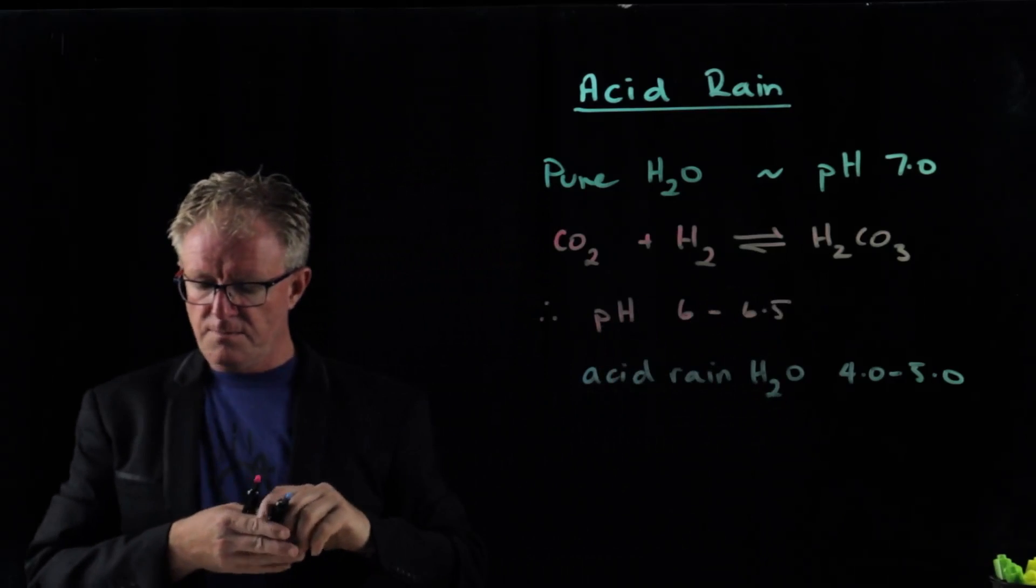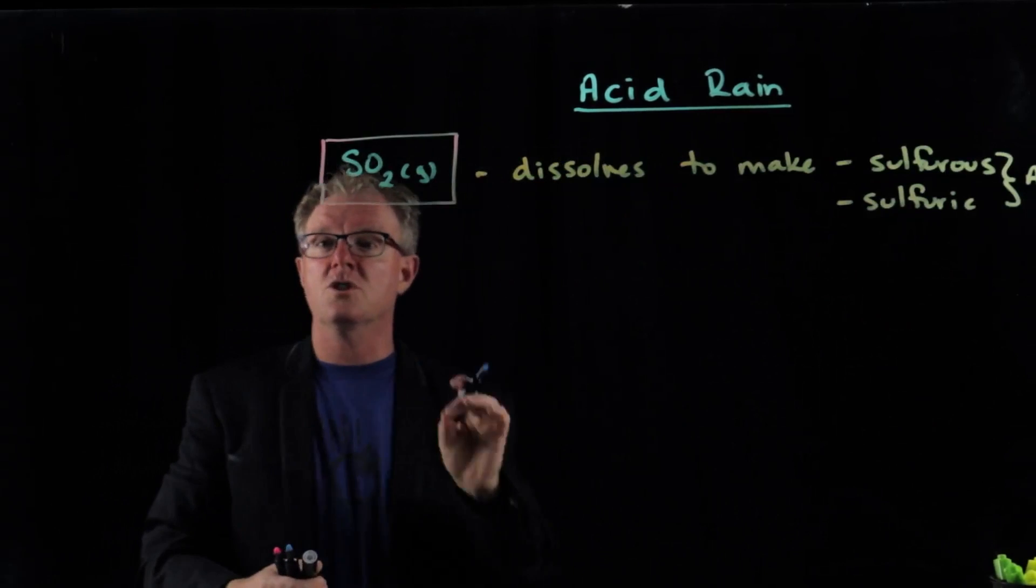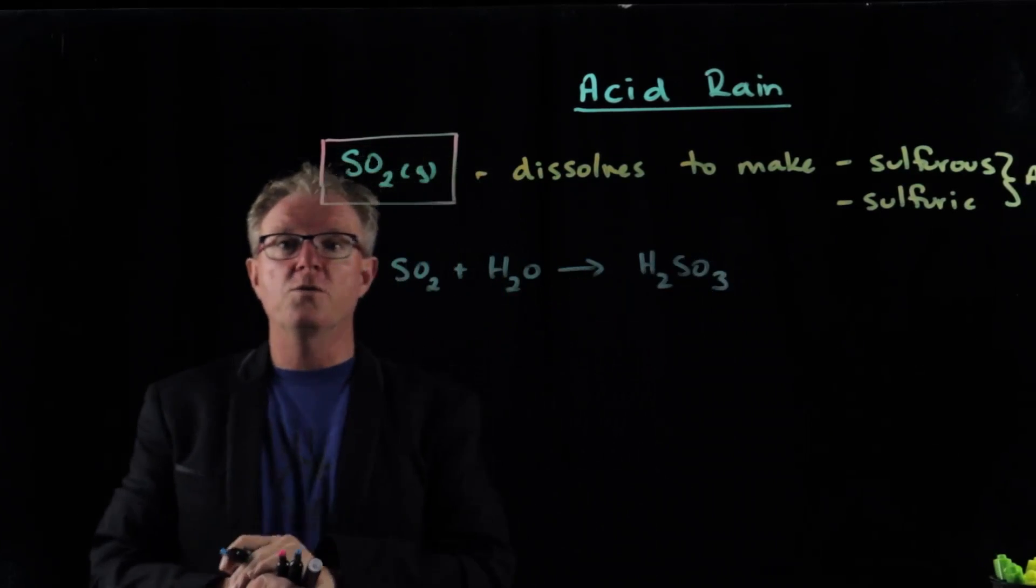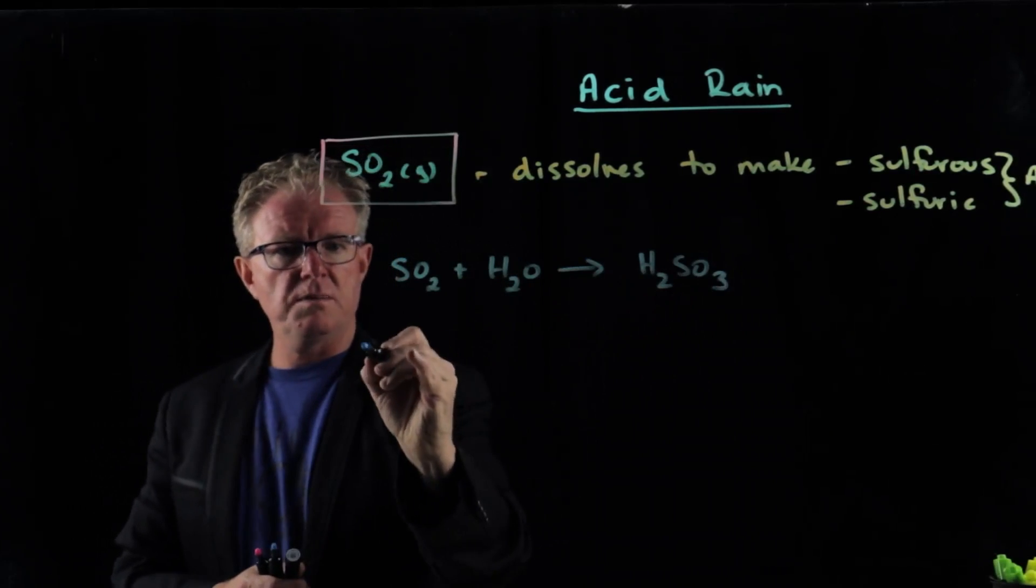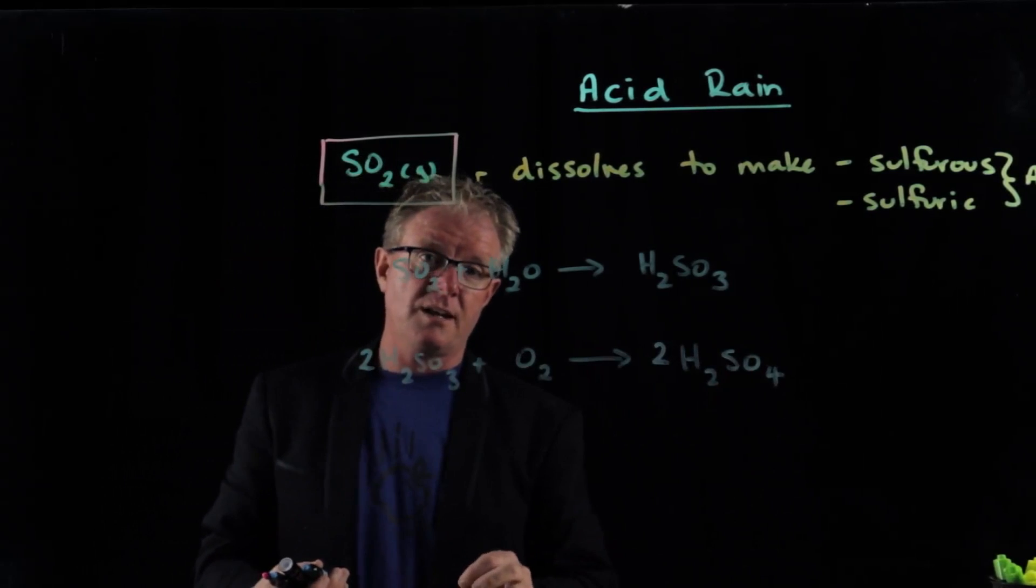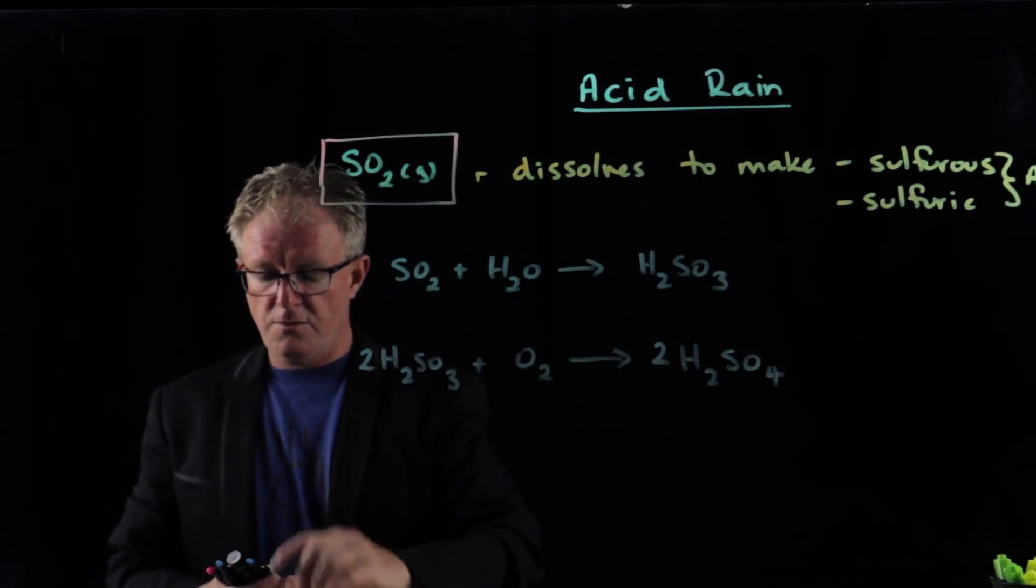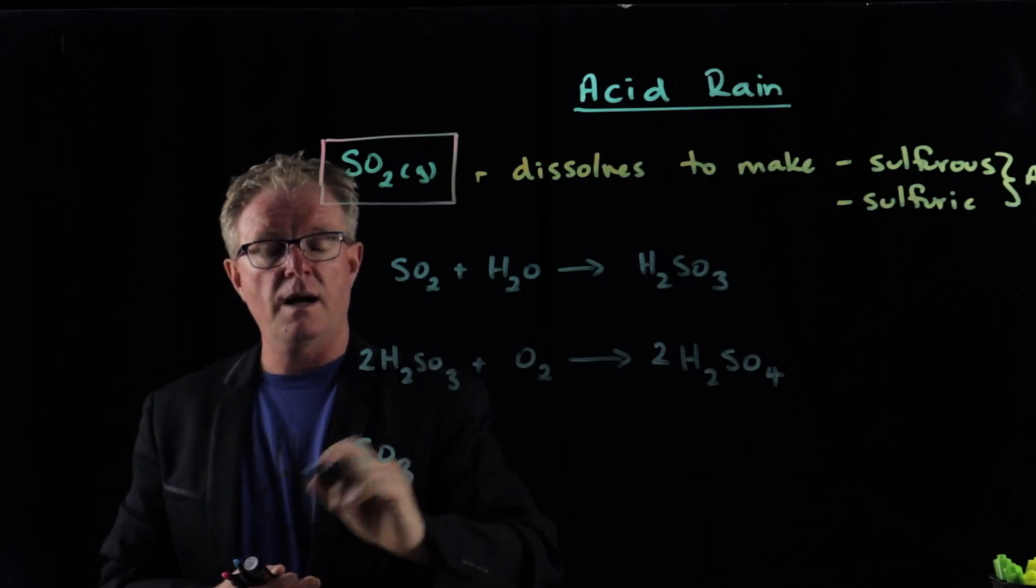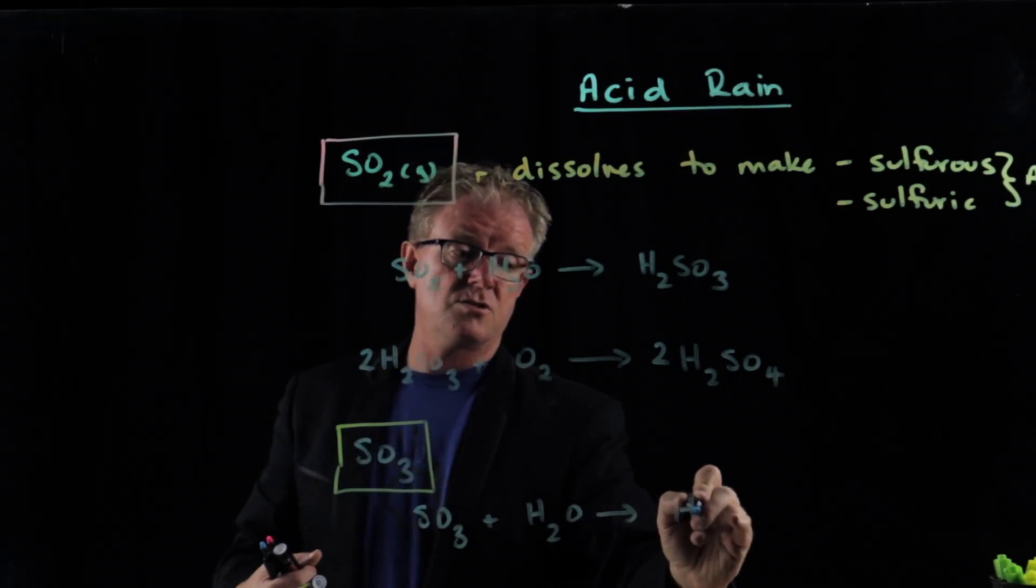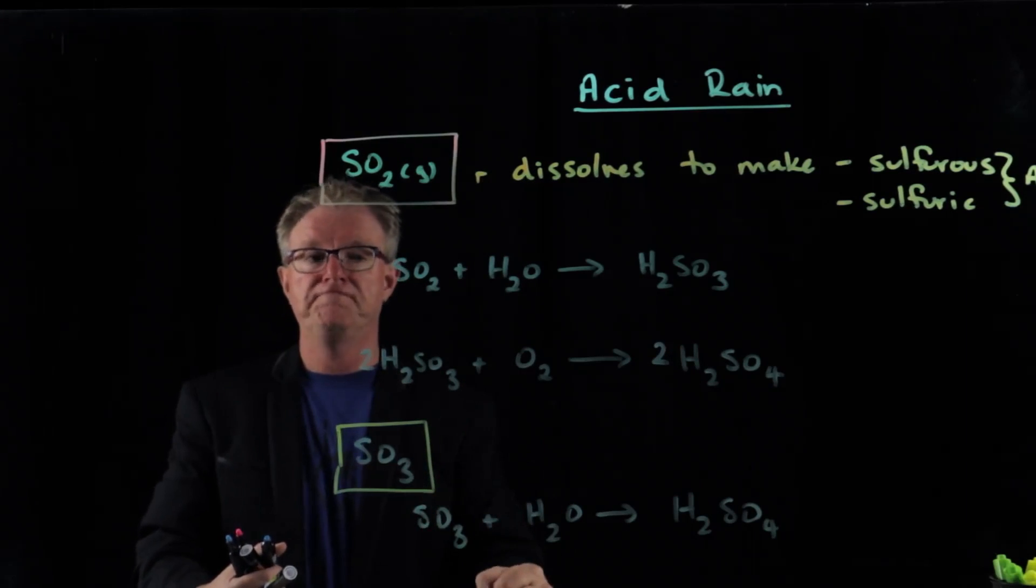So sulfur dioxide will dissolve in water to make our two acids, sulfurous acid and sulfuric acid. If we have SO2 that dissolves in water that'll make sulfurous acid, but then that sulfurous acid can be oxidized to sulfuric acid. We can also have sulfur trioxide, SO3, and sulfur trioxide reacts with water to make sulfuric acid straight away. Both of our sulfur gases will result in the production of sulfuric acid and acid rain.